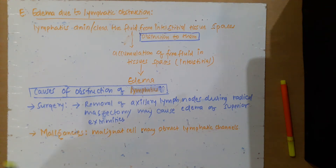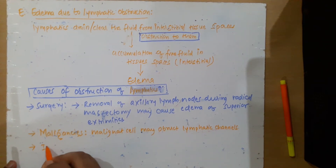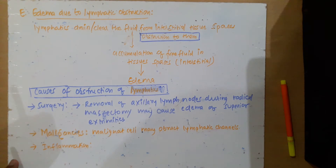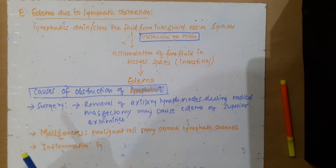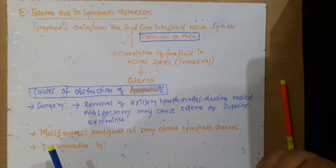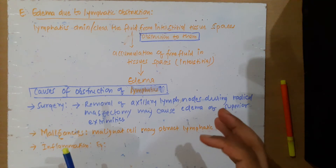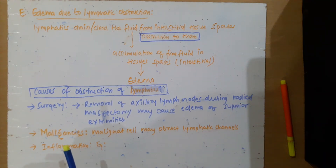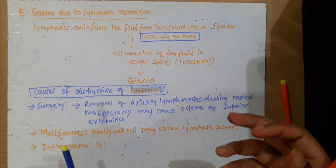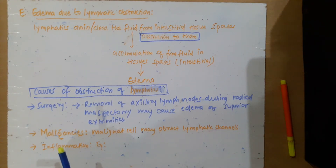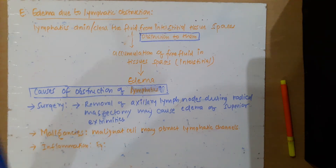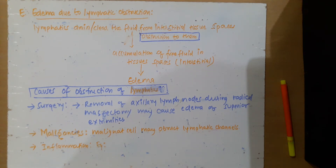The next cause is inflammation. For example, in filariasis — filariasis is a disease in which there is fibrosis of the lymphatic channels, which obstructs the lymphatic channels. Due to excessive accumulation, there is edema in the external genitalia and the lower extremities, and that condition is also known as elephantiasis.